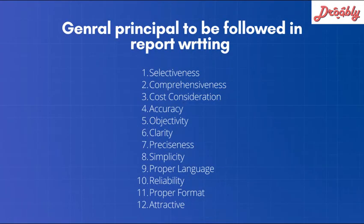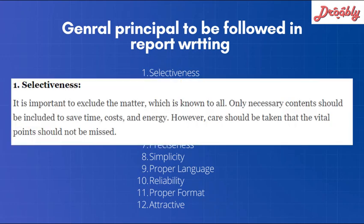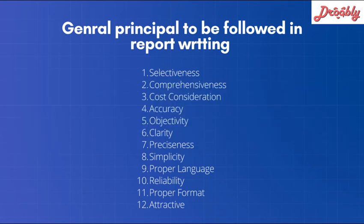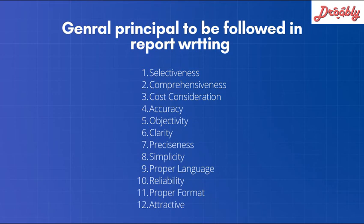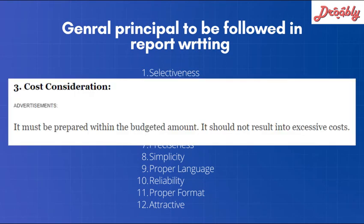The next and last topic of this chapter is the general principles to be followed in report writing. First is selectiveness — it is important to exclude matter known to all; all necessary content should be included to save time, cost, and energy, but care should be taken that vital points are not missed. Second is comprehensiveness — the report must be complete and include all necessary content; in short, it must contain enough detail to convey the meaning. Third is cost consideration — the report must be prepared within the budgeted amount and should not result in excessive cost.